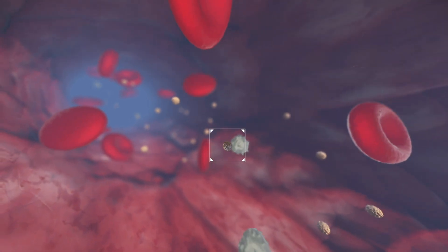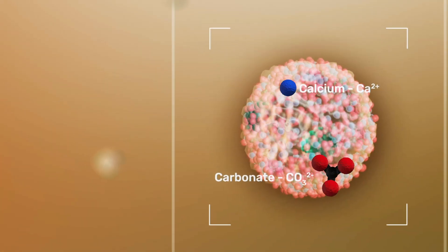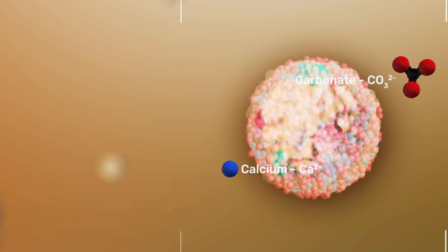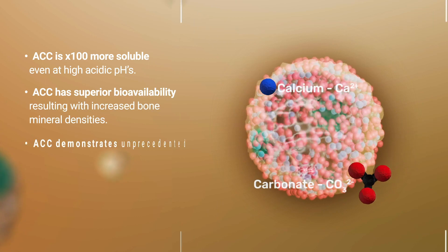Its amorphous phase means that its important constituents, calcium and carbonate, are less chemically bonded than in the crystalline structures. These combined features lead to the advantageous activities of ACC.